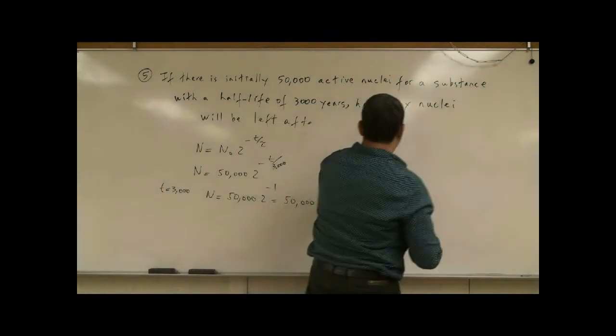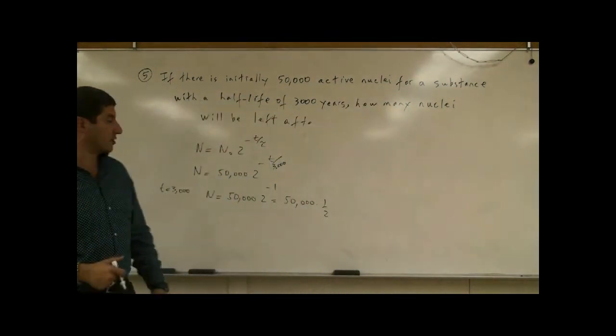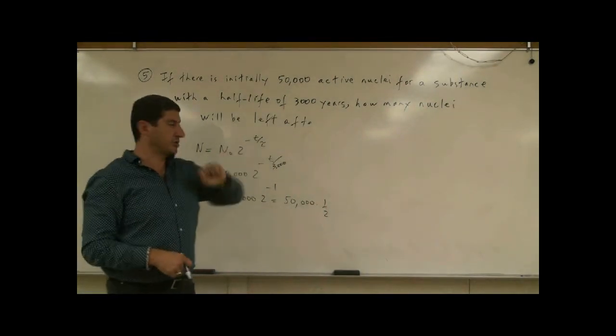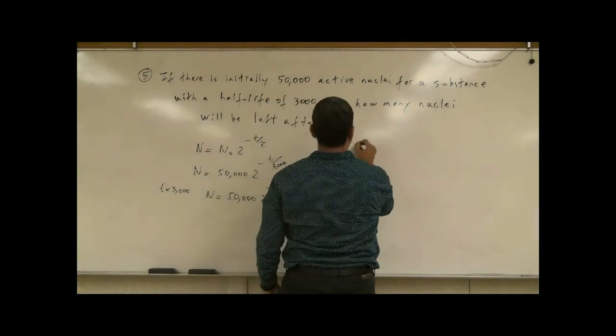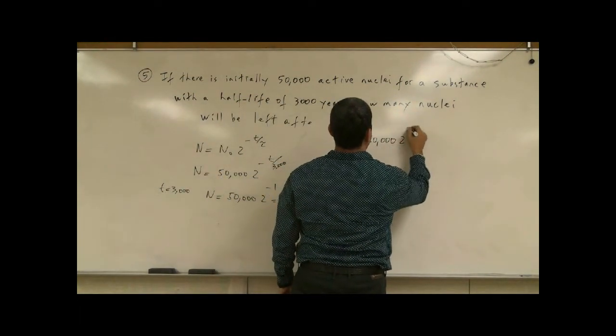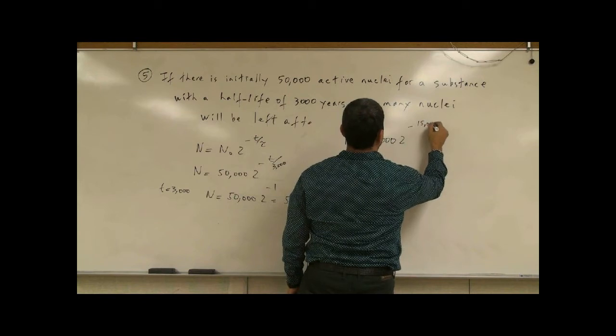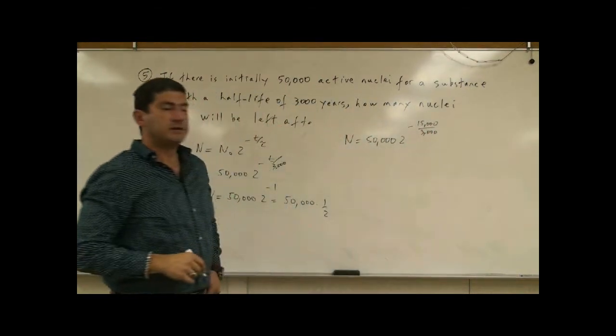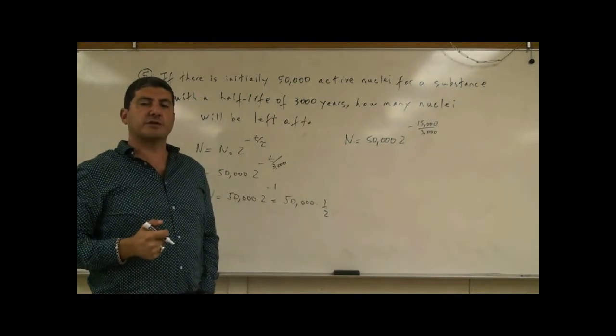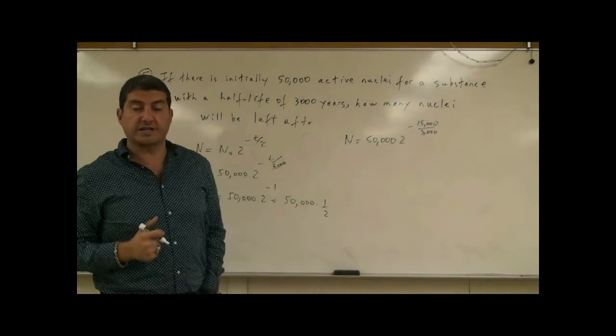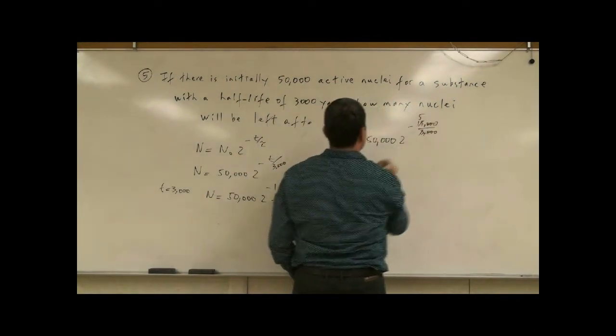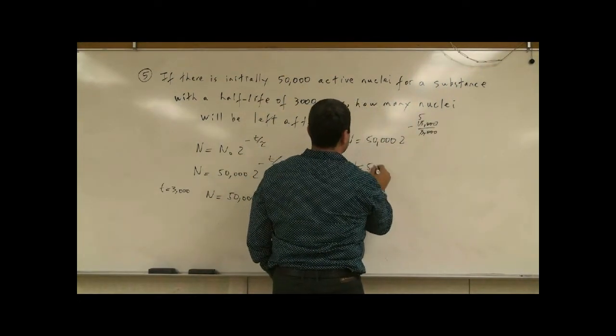Well, how can we use this equation to solve it very quickly? The time in this case is 15,000 years. So N is equal to 50,000 times 2 to the minus 15,000 over 3,000. That's 5 half-lives. So this one cancels this. This is 5 half-lives. So N is equal to 50,000 times 2 to the power minus 5.